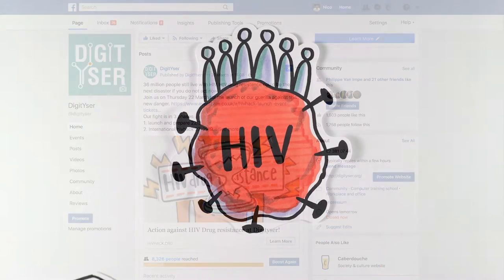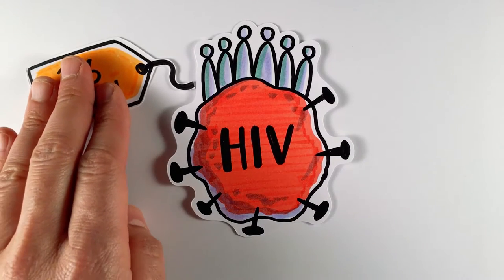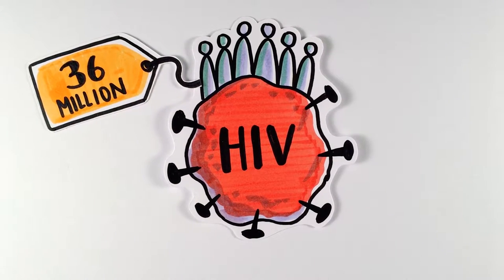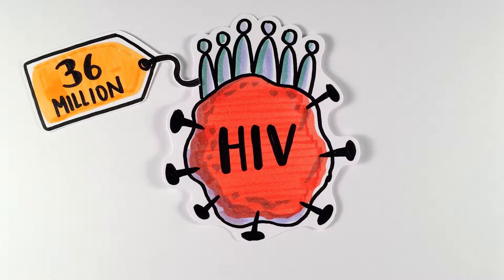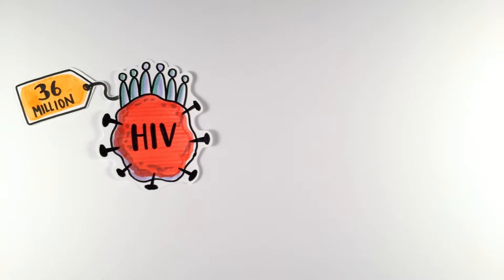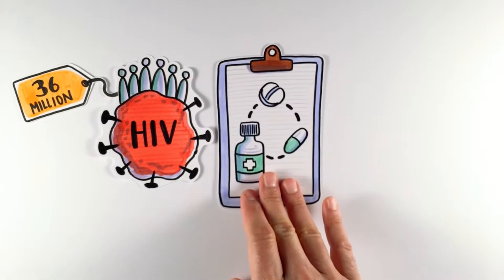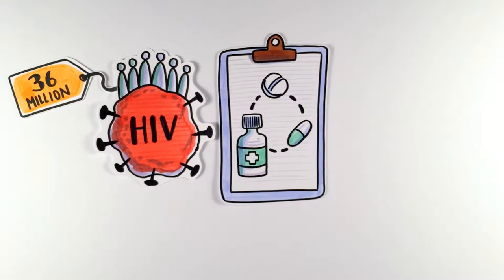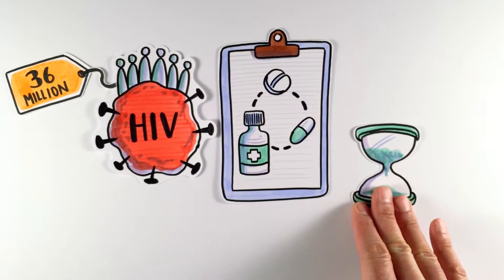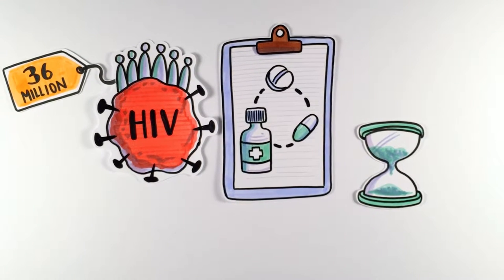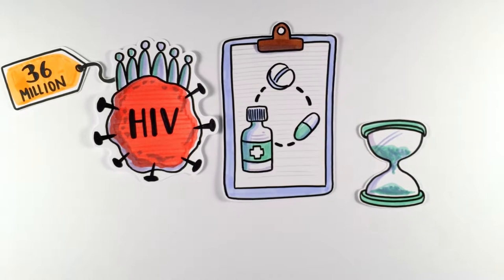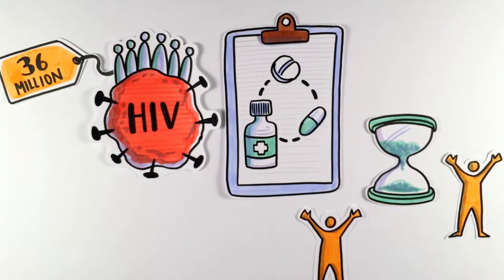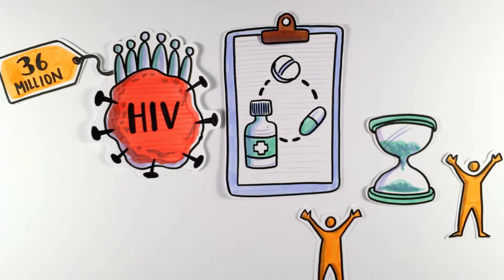There are over 36 million people still living with HIV, which remains to be one of the deadliest viruses known to man. Over the years, better drugs and convenient treatment regimes have made great progress in increasing the life expectancy of millions of people around the world. Access to lifetime treatment is a key to its success.